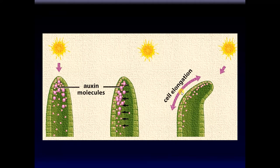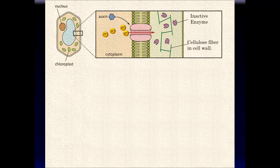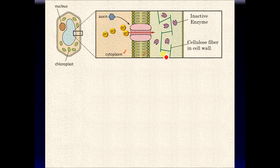Again, auxins are initially equally distributed. When light strikes the plant unequally, the auxins move away from the stimulus and cause cell elongation in those cells. It is the auxin-affected cells that elongate, which causes the plant to bend towards the light. Now we should look closely at one of these cells to see exactly how auxins cause them to elongate. Here's one hypothetical cell — we're going to magnify the cell membrane and the cell wall. The cytoplasm is inside, then the plasma membrane, and then the cell wall.